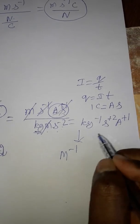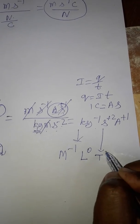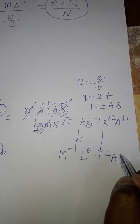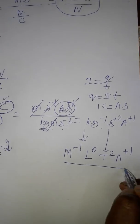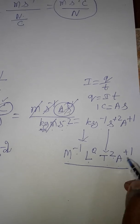Dimension formula for mass M minus 1. For length is not there, L is 0. Time is T power square, ampere plus 1. The dimensional formula will be M⁻¹L⁰T²A⁺¹.